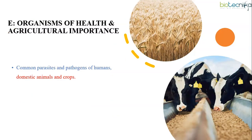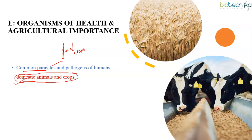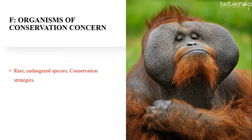Subunit E is about organisms of health and agricultural importance. The most important topic here is domestic animals and crops, while common parasites and pathogens of humans is of medium importance. From this subunit you can expect 'match the following' type questions where they mention certain food crops along with their region of domestication and you have to choose the correct match. The main focus should be on domestic animals and crops, though you can also give a reading to common parasites and pathogens of humans.